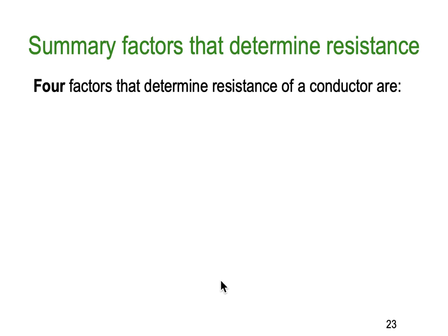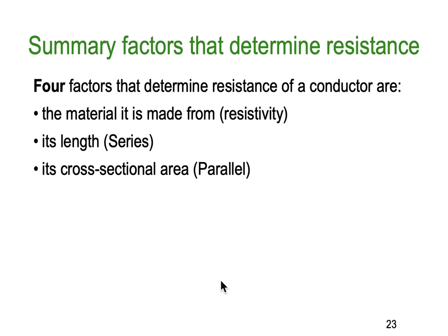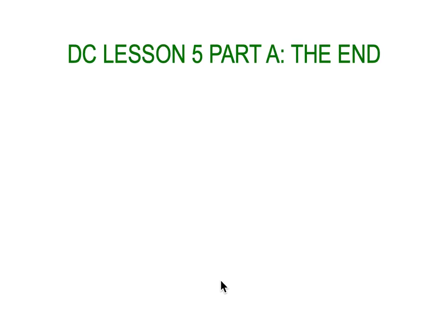To summarise the factors that determine resistance: the four factors are — the material from which it is made, which we call the resistivity; its length, where the longer it gets it's like putting lots of resistors in series; the cross-sectional area, like putting resistors in parallel; and the temperature of the material — most metals are positive temperature coefficient, and carbon is an example of negative temperature coefficient. That ends DC lesson number five, Part A.